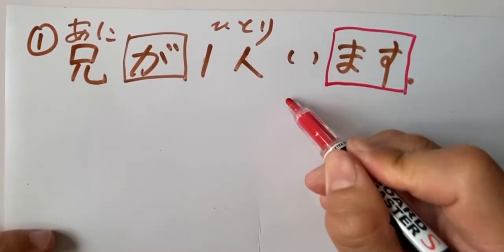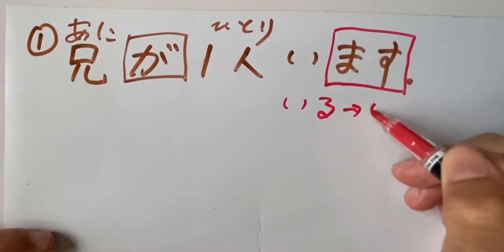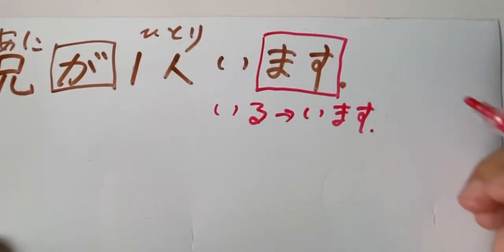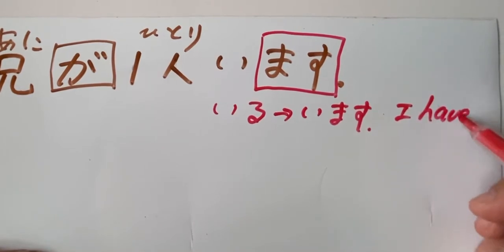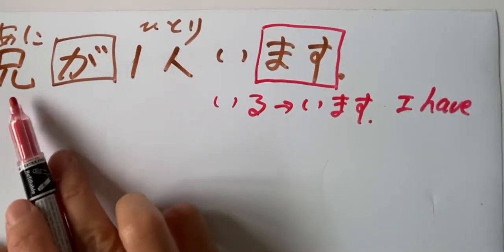Over here, our verb is actually iru. Ne. Imasu. Okay. So iru means I have. Ne. I have. See? Here our subject is brother. Ne. Older brother.